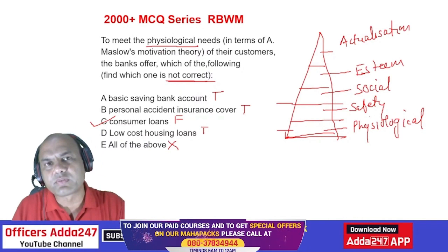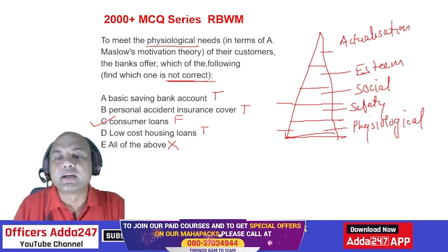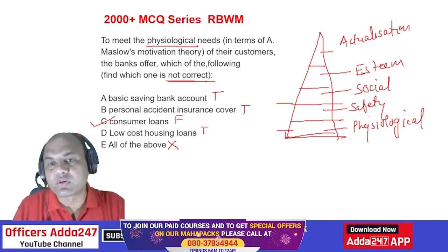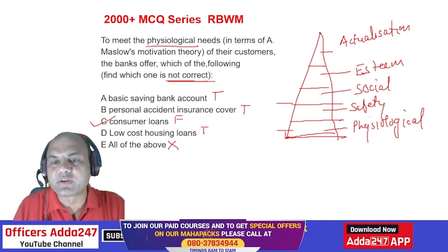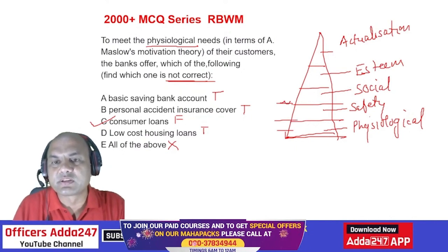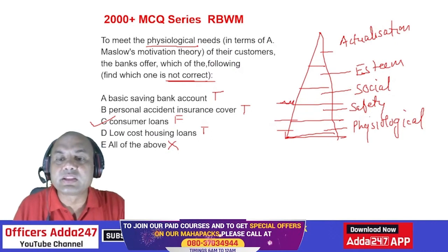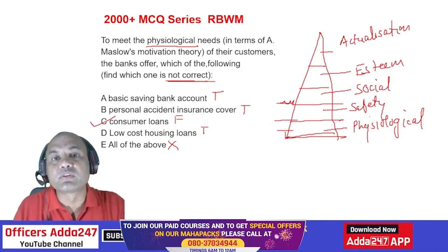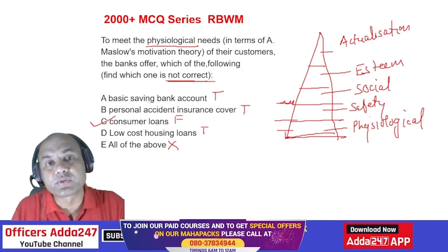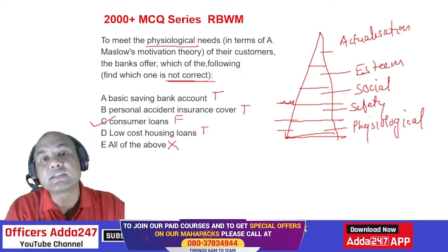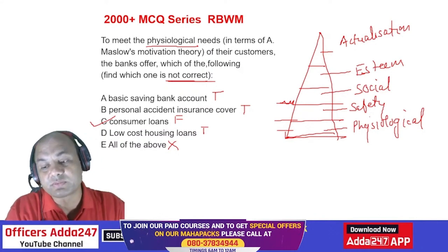Consumer loans are offered from the safety level onwards — even at the safety level, a person might go for some white goods like a refrigerator. So consumer loans are not offered at the physiological level.